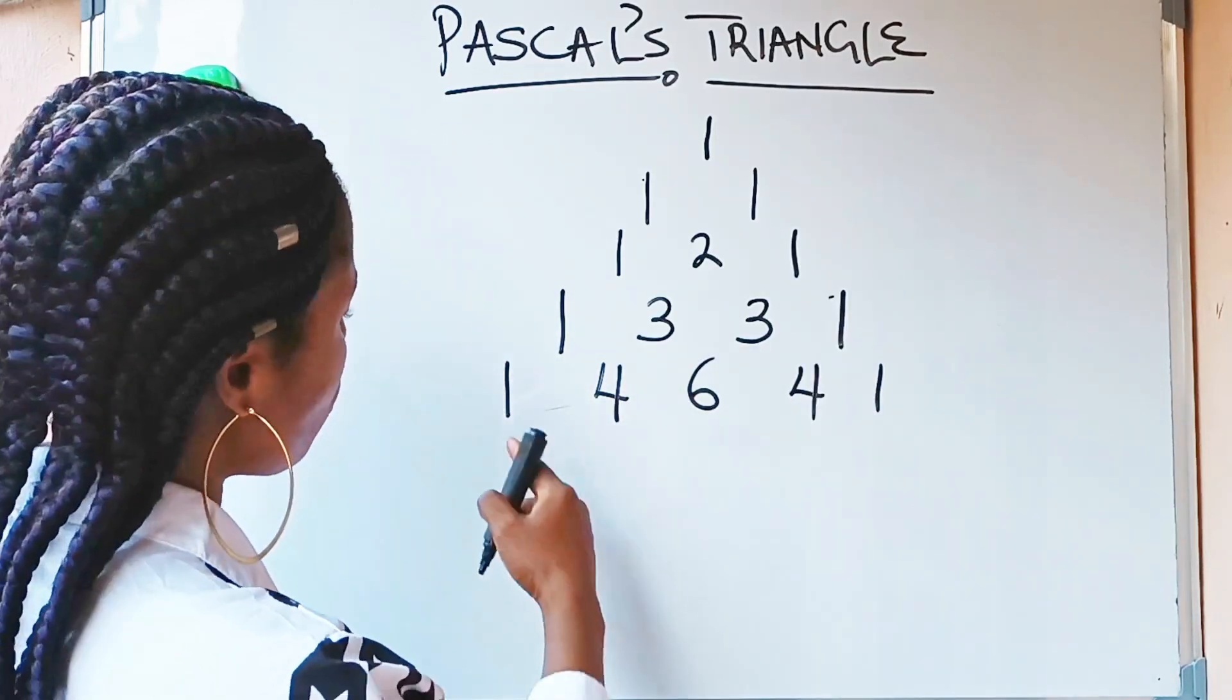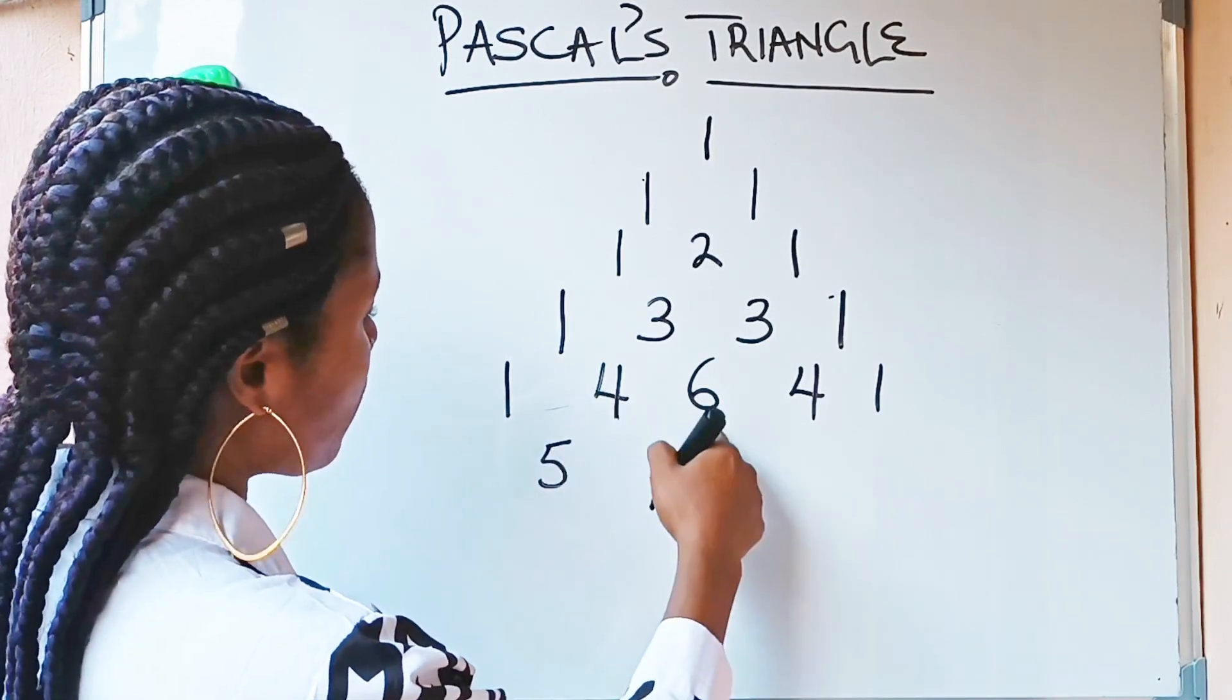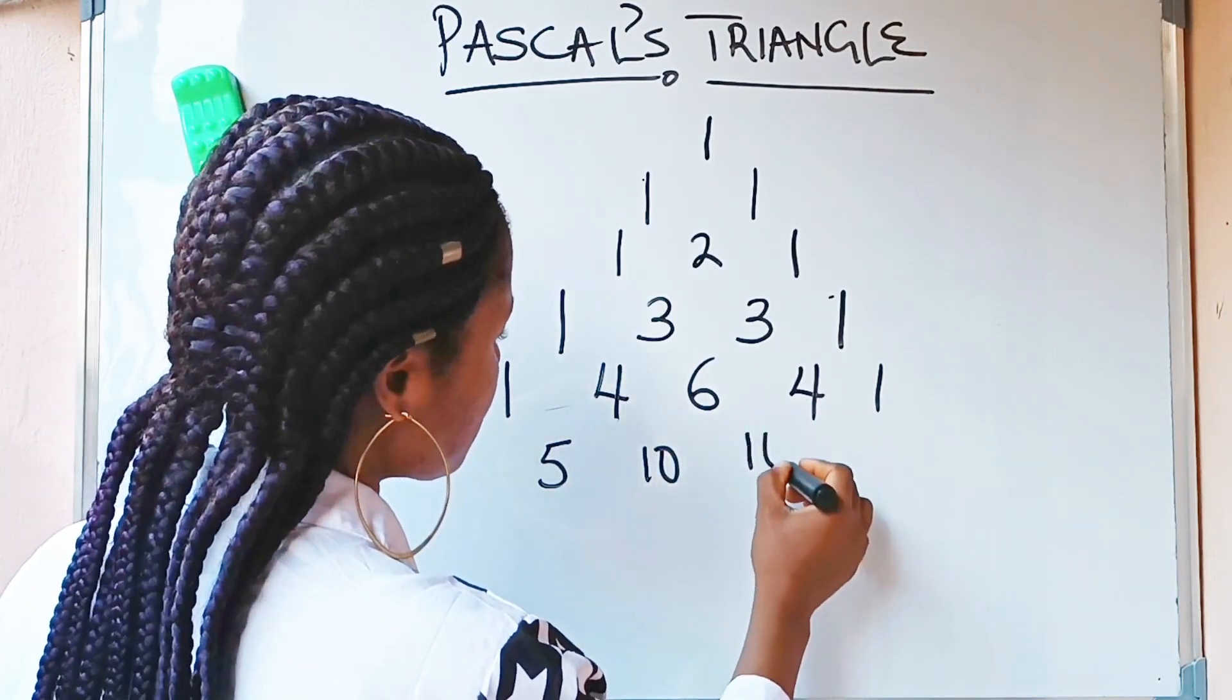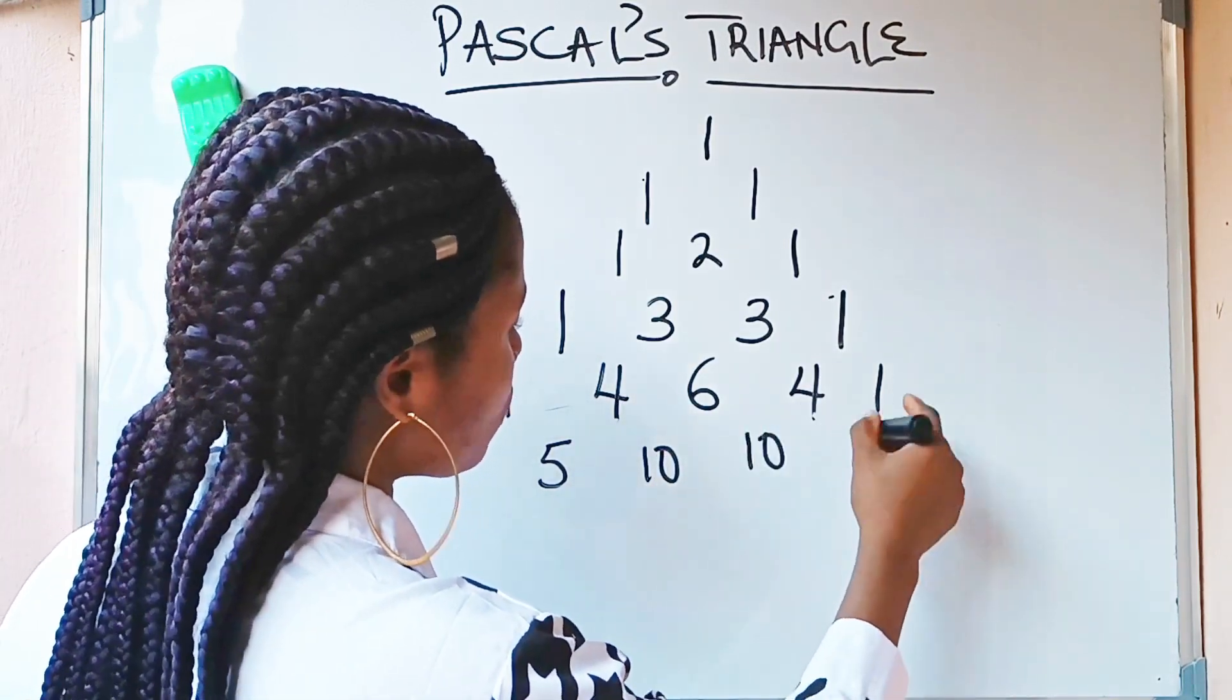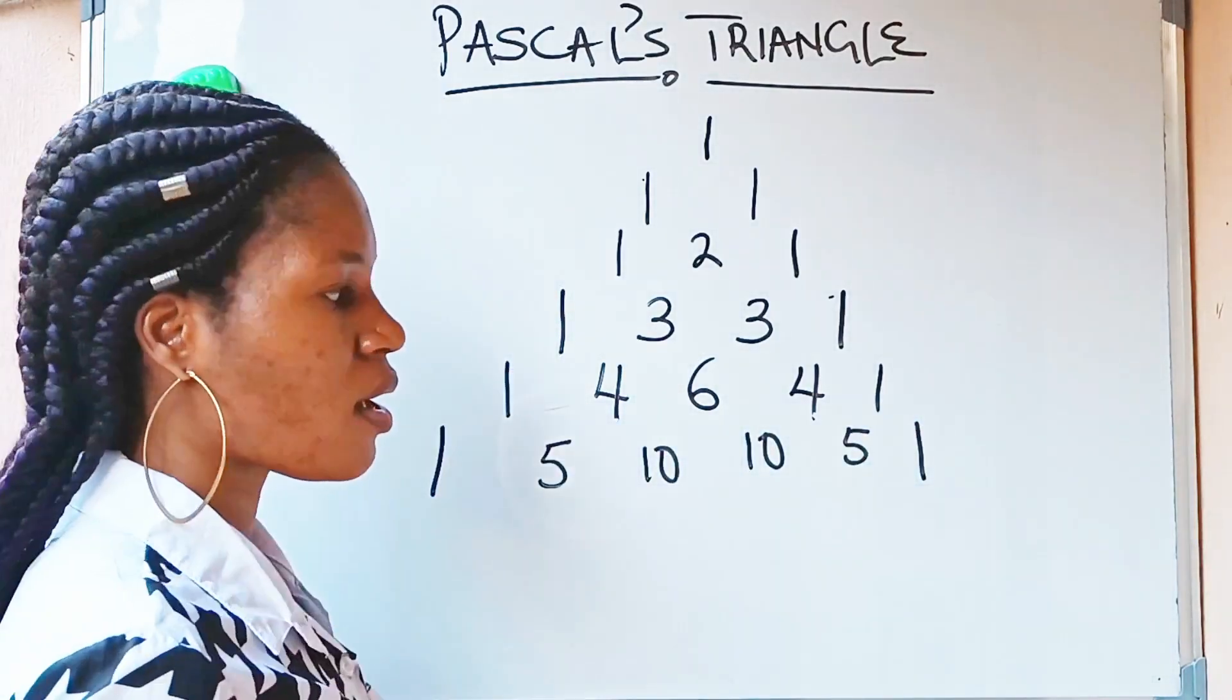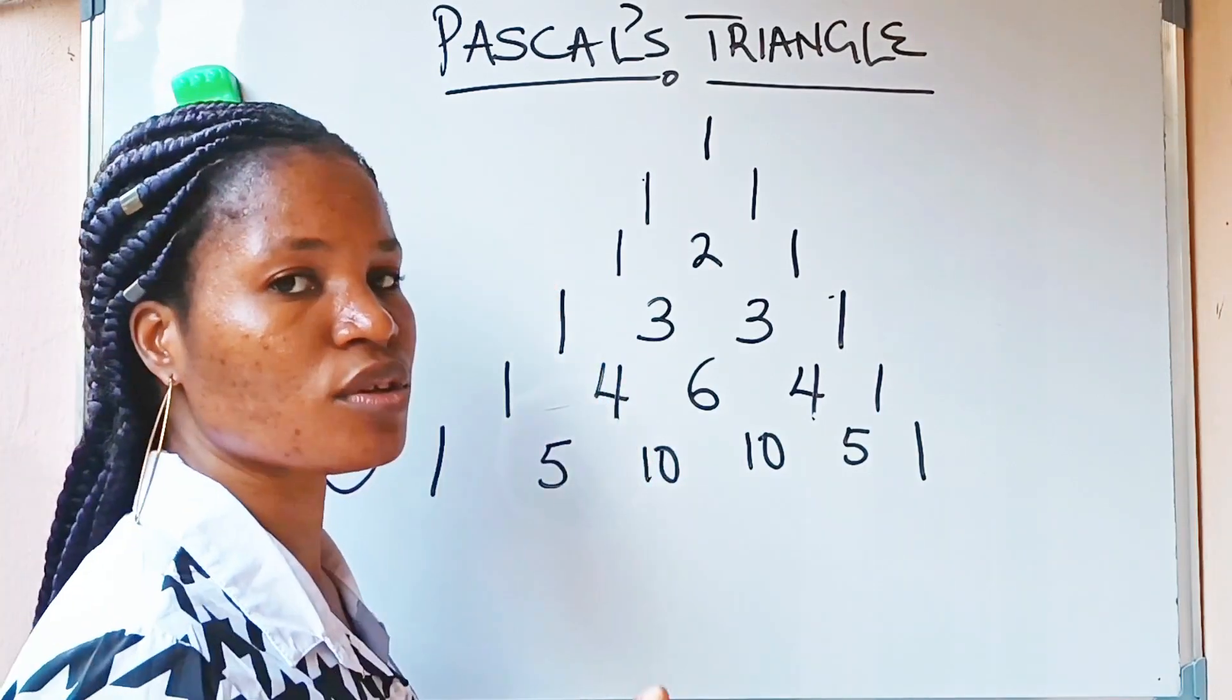Alright. So, I continue. 1 plus 4 will give me 5. 4 plus 6 will give me 10. 6 plus 4 will give me 10. 4 plus 1 will give me 5. I will complete it with 1 and 1. I hope you understood what I did or what I am doing.